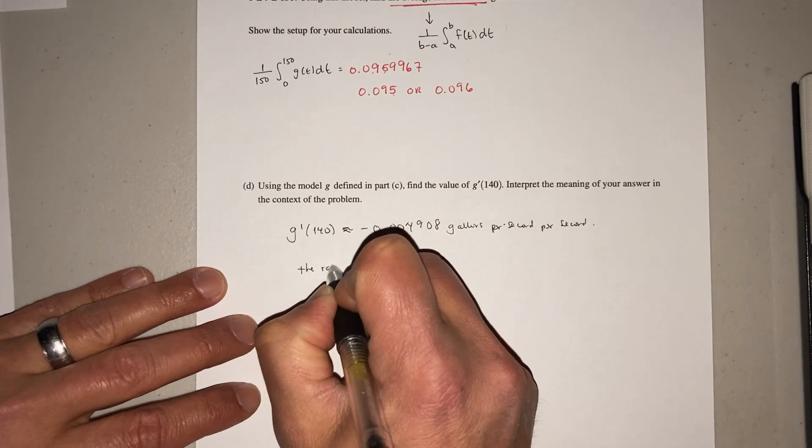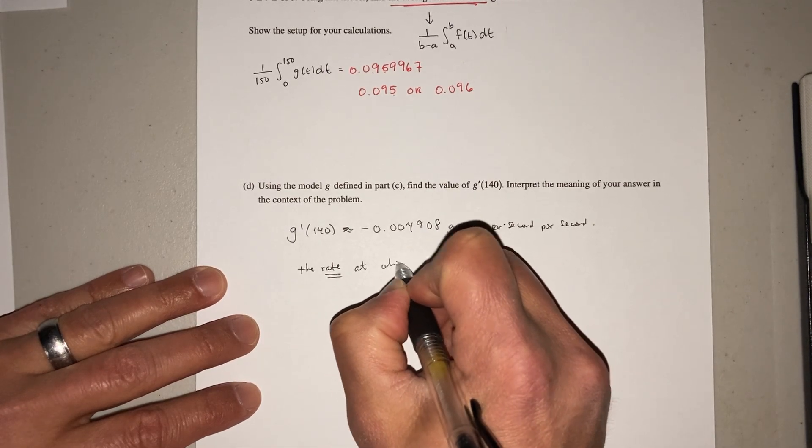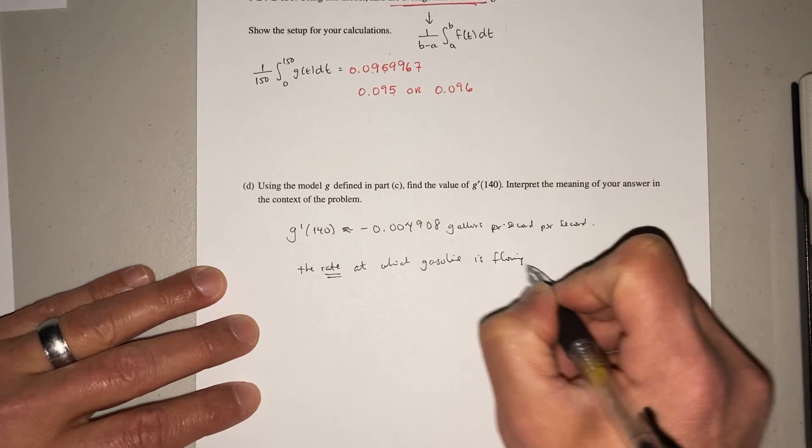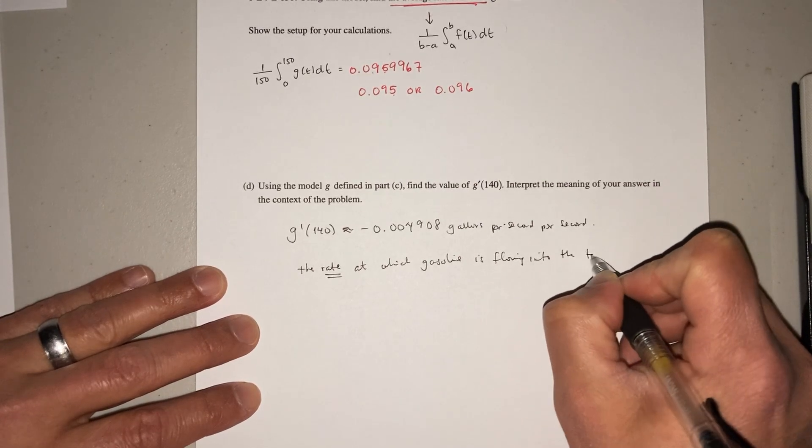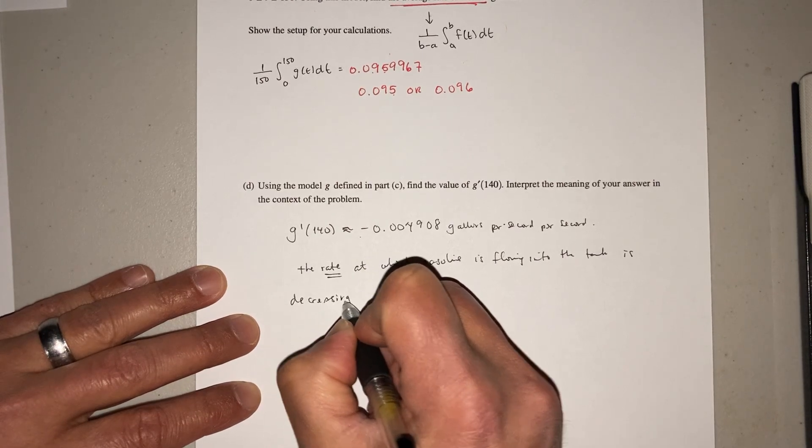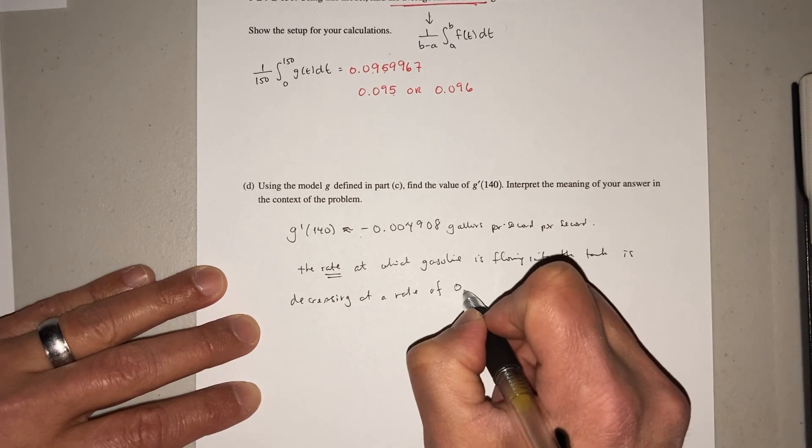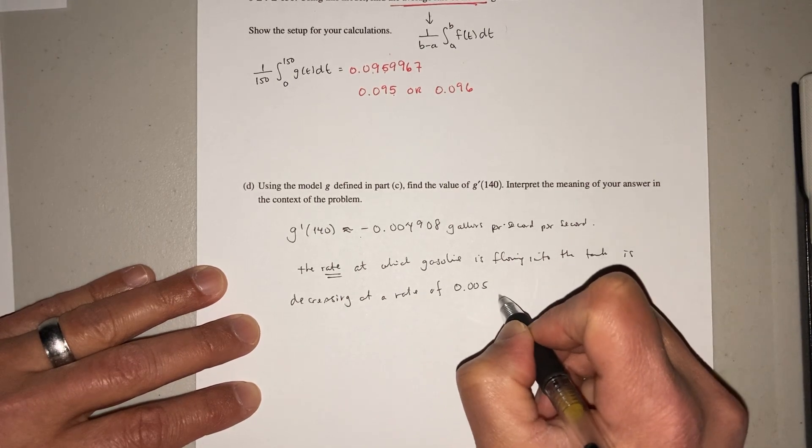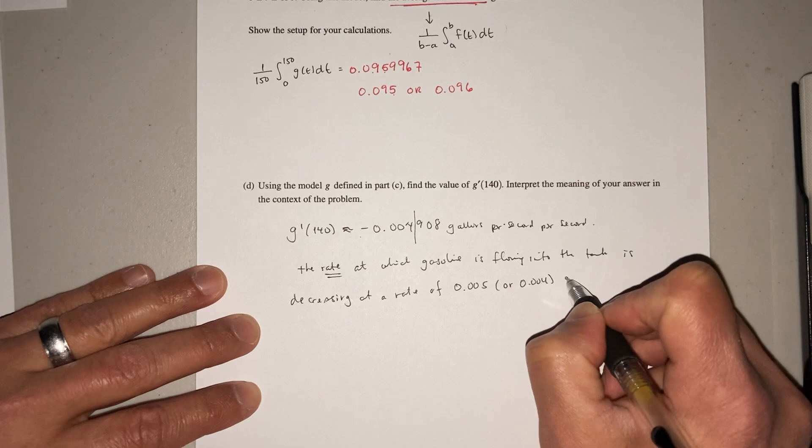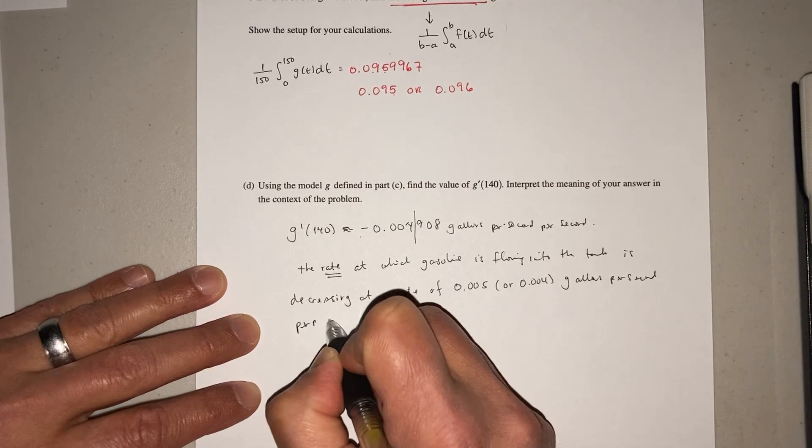So once you plug this into your calculator, you've got to interpret it. So you're going to write the rate. And that's important because now this is a rate. It's a derivative. The rate at which, and I'm sorry, I know I'm writing fast, gasoline is flowing into the tank is decreasing. Why is it decreasing? Because it's negative. It's decreasing at a rate of, and you can just go ahead and round it, so you're going to write 0.005 or if you want to truncate it, you can write 0.004 gallons per second per second.